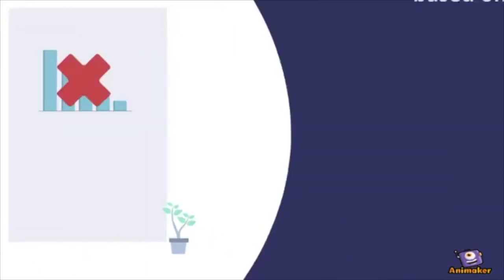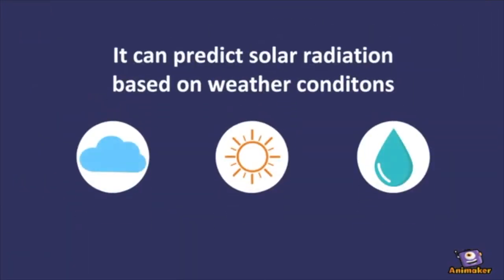However, with the help of machine learning, different weather conditions and how they affect solar radiation can be taken into consideration to provide more accurate results. Furthermore, if you feed in more weather data to your model, over time it will be able to make better predictions.